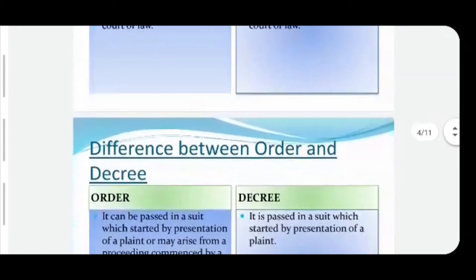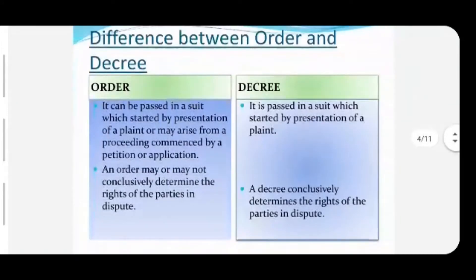Now we would study the differences between order and decree. An order can be passed in a suit which was started by presentation of a plaint, or may arise from a proceeding commenced by petition or application — so either a plaint, petition, or application. But a decree is passed only in a suit which started by presentation of a plaint. Second difference: an order may or may not conclusively determine the rights of the parties to the dispute, while a decree always gives a conclusion to the rights of the parties which are in dispute.